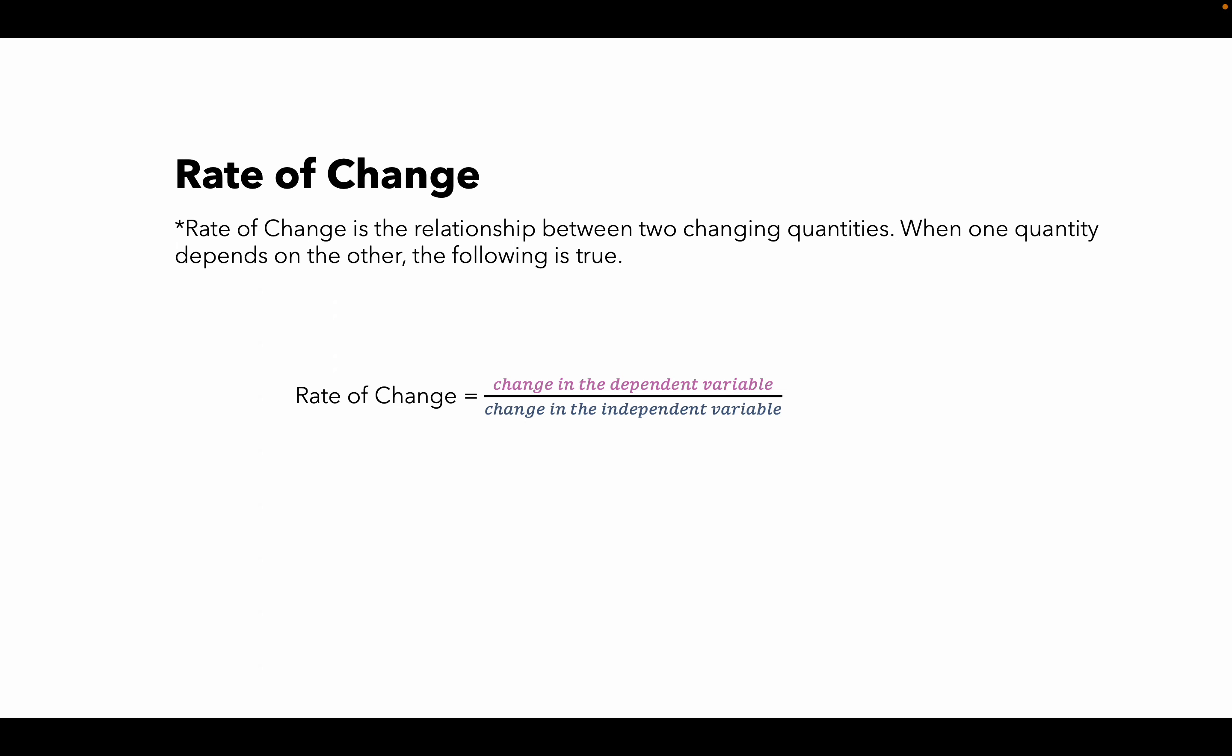Rate of change is the relationship between two changing quantities. When one quantity depends on the other, the following is true: rate of change equals the change in the dependent variable divided by the change in the independent variable.